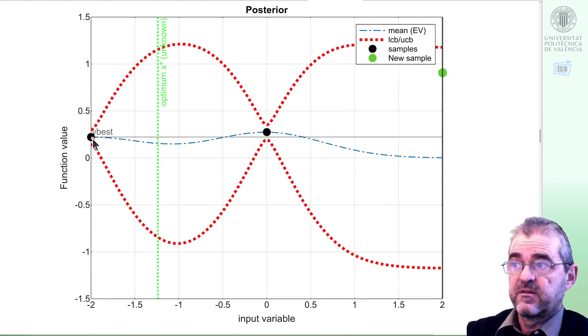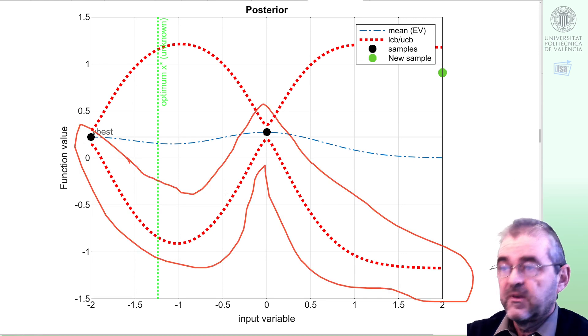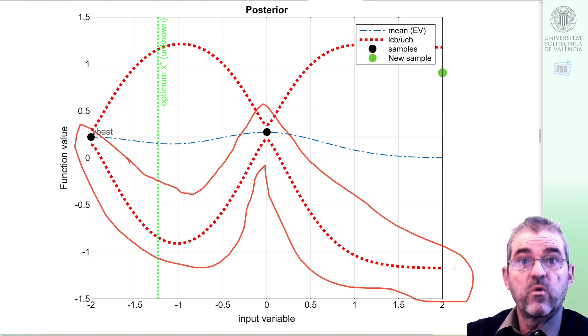So I will introduce that sample to my Gaussian process formula and update the posterior. Here we have, after including this sample, the new posterior. Then, of course, confidence bounds are narrowed to more or less measurement noise at the samples. And I have this new lower confidence bound in here. And the lowest lower confidence bound is here.